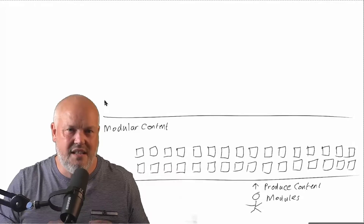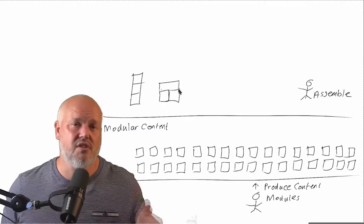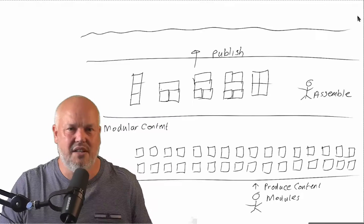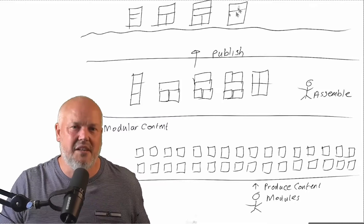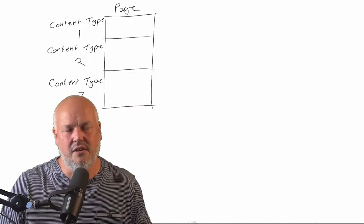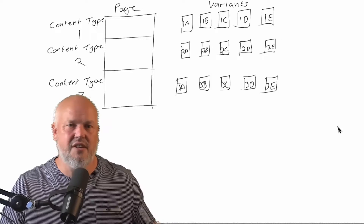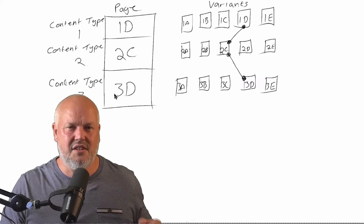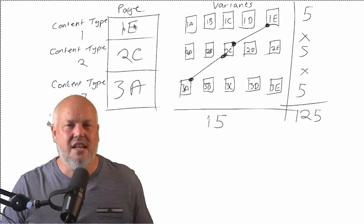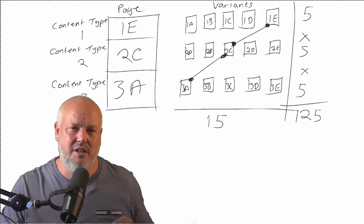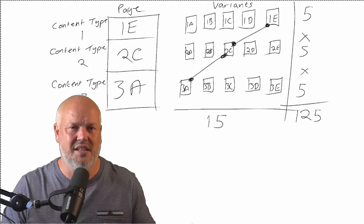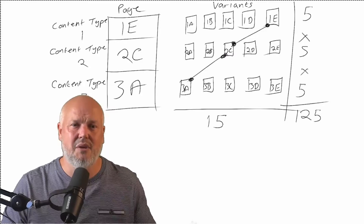What you really need is for that content to be modular. The business focuses on creating modules of content that can be assembled into pages and then published, giving you far more flexibility and the ability to build far more variants. Take a page made of three different content types with five variants of each — that gives you 125 combinations, yet you've only built 15 smaller content modules. That's where the efficiencies of modular content come into play.